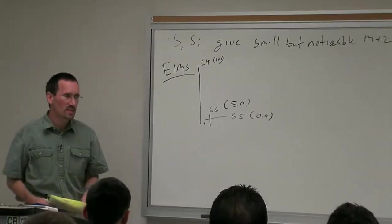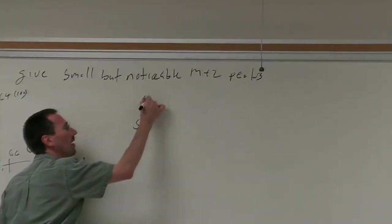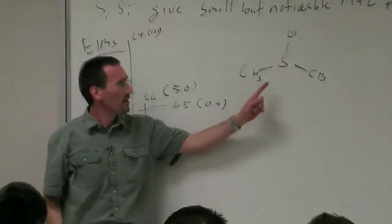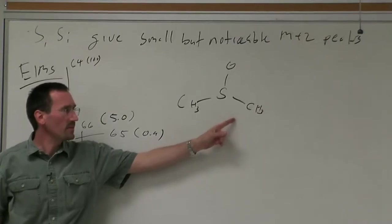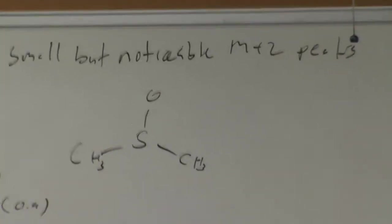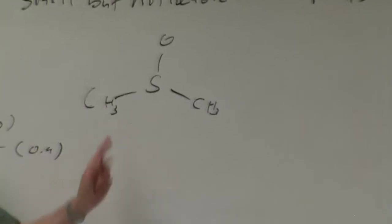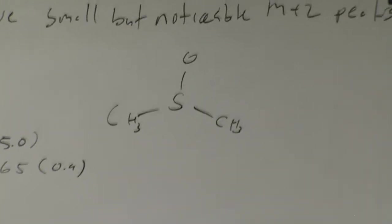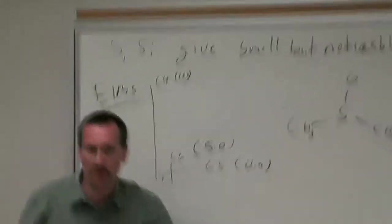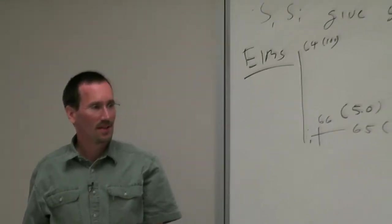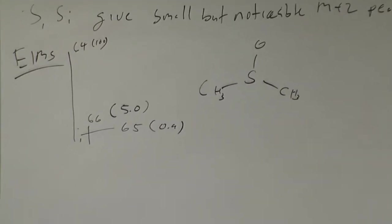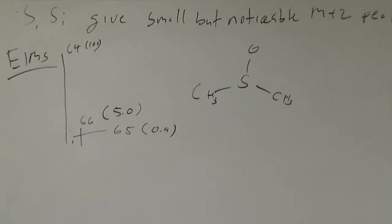DMSO? DMSO would be 15, 15 sulfur and oxygen so we're at 32, 16, 48, 30. That doesn't work out. Too big and we'd expect our M plus 1 peak with two carbons to be a little bit bigger.